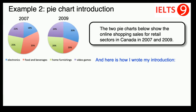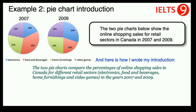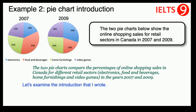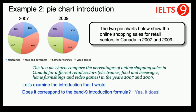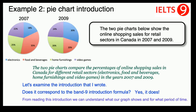And here is how I wrote my introduction: 'The two pie charts compare the percentages of online shopping sales in Canada for different retail sectors — electronics, food and beverages, home furnishings and video games — in the years 2007 and 2009.' Let's examine the introduction. Does it correspond to the Band 9 introduction formula? Yes it does! From reading this introduction, we can understand what our graph shows — percentages of online shopping sales — and for what period of time: years 2007 and 2009.